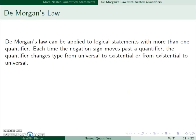So De Morgan's Law can be applied to logical statements with more than one quantifier. Every time the negation sign moves past a quantifier, it changes type from universal to existential or from existential to universal.